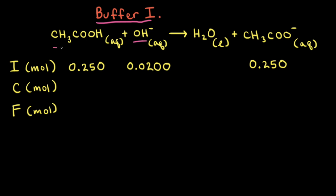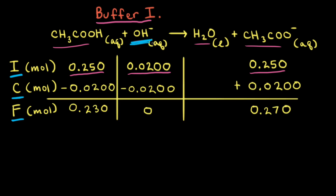The hydroxide anions react with acetic acid to form water and the acetate anion. In buffer solution 1, the initial moles of both acetic acid and the acetate anion are both 0.250, and to that buffer solution we're adding 0.0200 moles of hydroxide anions. To find the final moles we'll use an ICF table where I is initial moles, C is change in moles, and F is final moles. For this reaction hydroxide anions are the limiting reactant, so we use up all 0.0200 moles of hydroxide anions. Since the mole ratio is one to one, we also use up 0.0200 moles of acetic acid, leaving us with 0.230 moles of acetic acid.